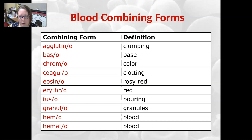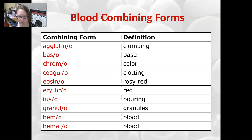Agglutino is clumping; baso is base; chromo is color; coagulo is clotting; eosino is rosy red, for eosinophils; erythro is red, and you'll see it in erythrocytes; fuso is pouring; granulo is granules; and hemo and hemato are both blood.